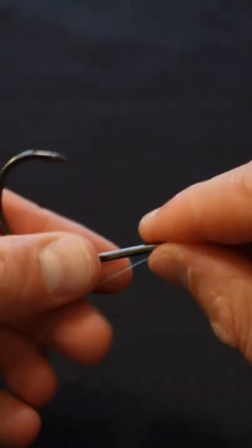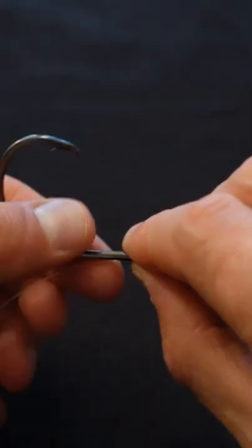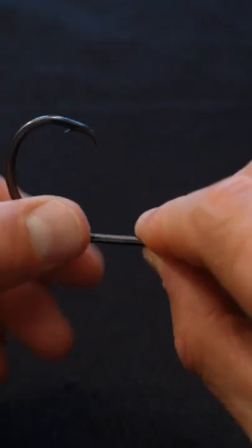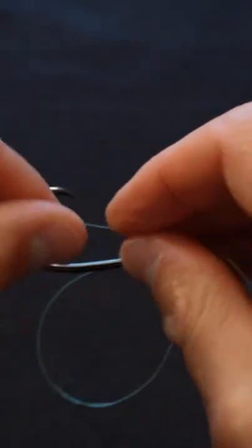So first step is you're going to feed the line through the eye of the hook and then you're going to pinch it up against the shank of the hook. Next, you're going to make that all-important loop, so just like that.